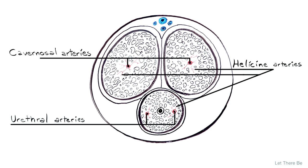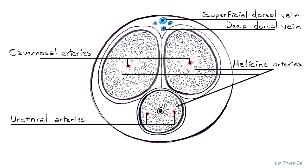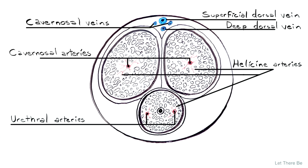Blood drains from the penis via the superficial, deep dorsal, cavernosal, and crural veins.